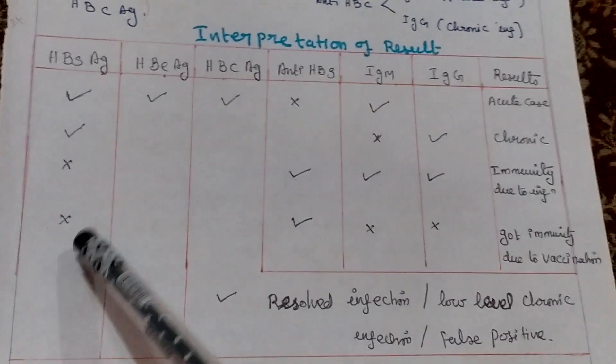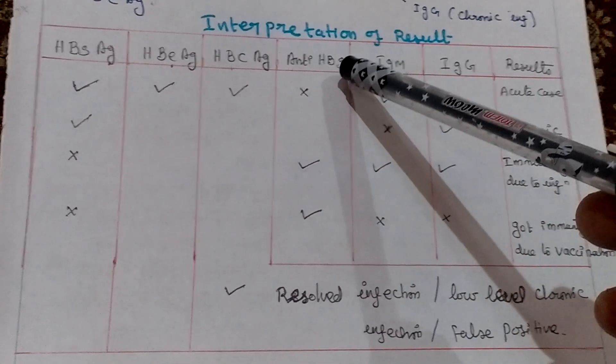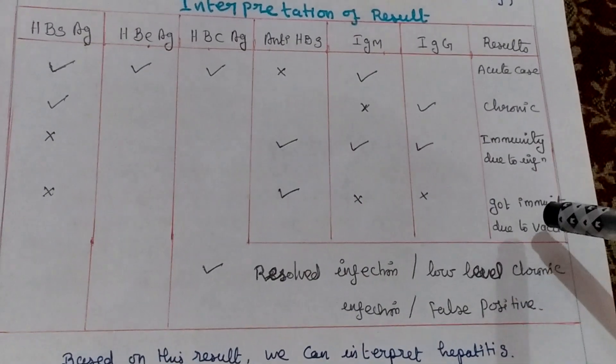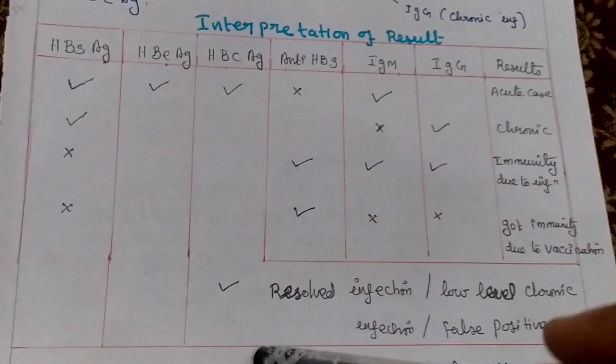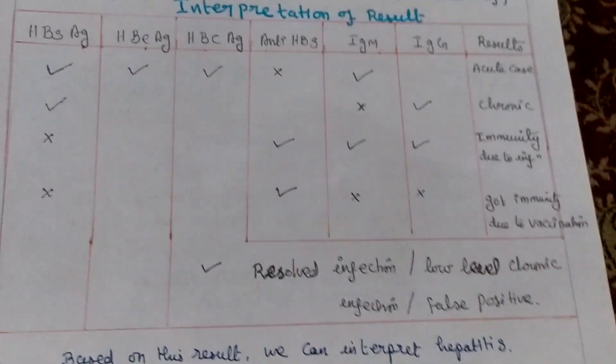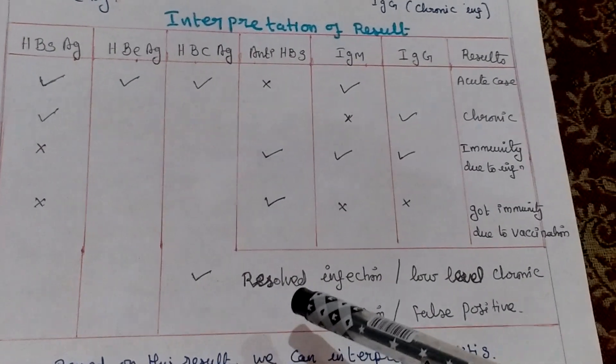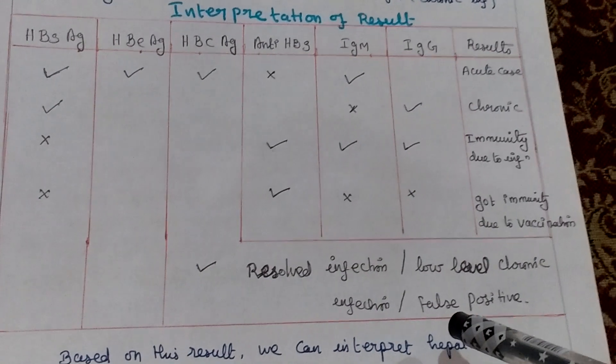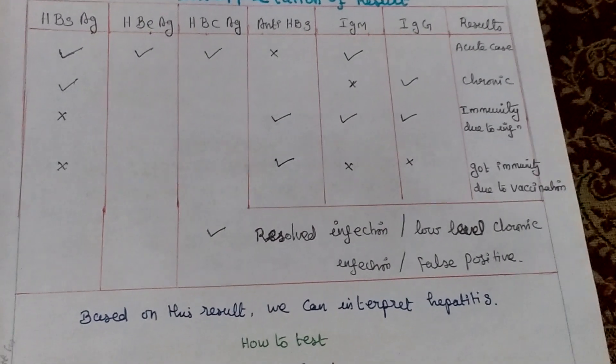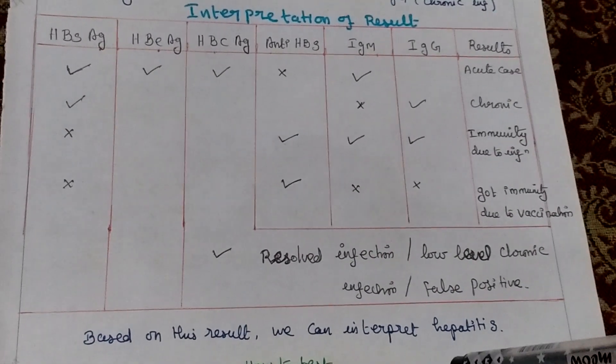If only anti-HBs is present, it indicates immunity due to vaccination. If only HBcAg is present with remaining absent, it means resolved infection, low-level chronic infection, or false positive. Based on results we can interpret hepatitis infection.